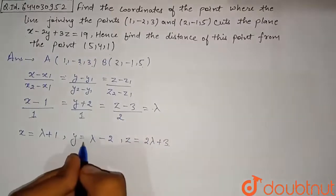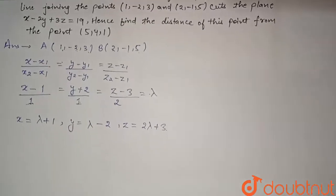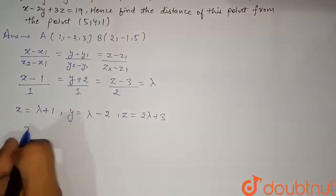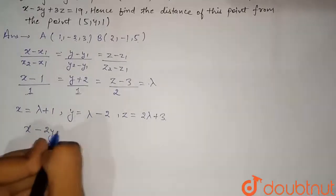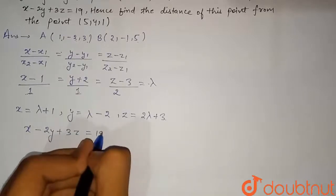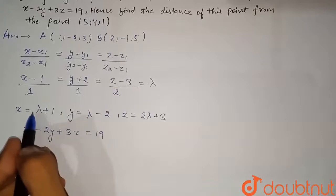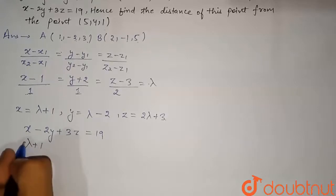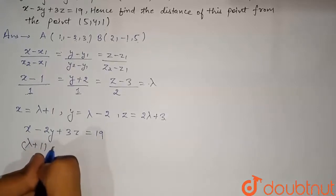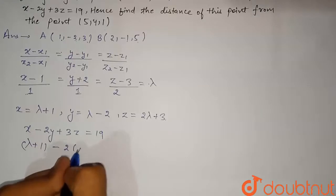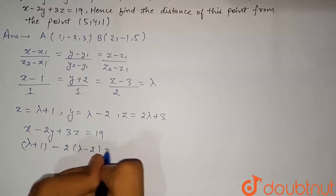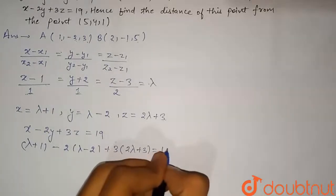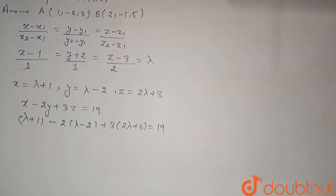Since we need the point of intersection of the line and the plane, we substitute the general point into the plane equation x + 2y + 3z = 19. Substituting: (λ + 1) + 2(λ - 2) + 3(2λ + 3) = 19.